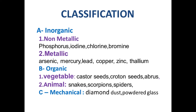Examples of non-metallic irritants are phosphorus, iodine, chlorine, and bromine. Metallic irritant poisons are arsenic, mercury, lead, copper, zinc, and thallium.